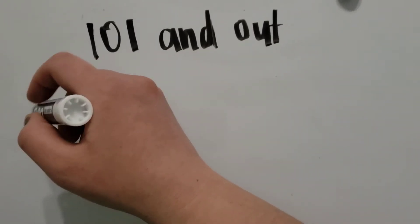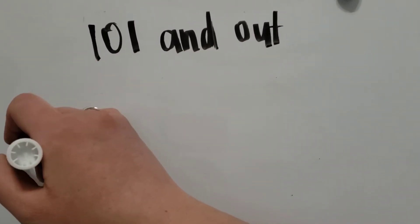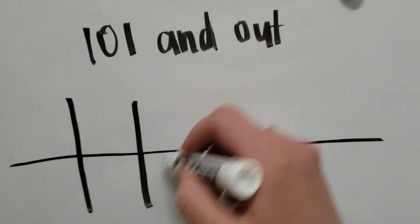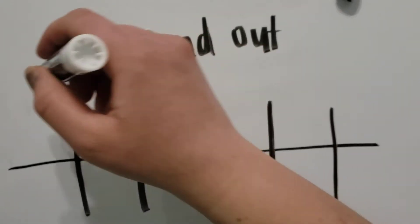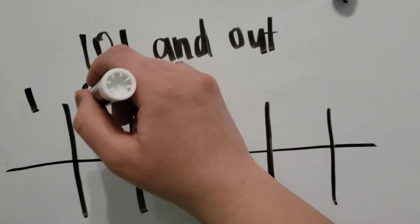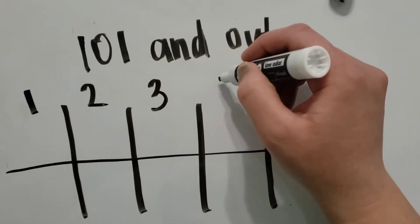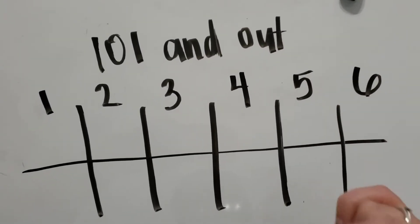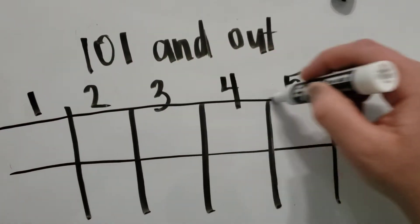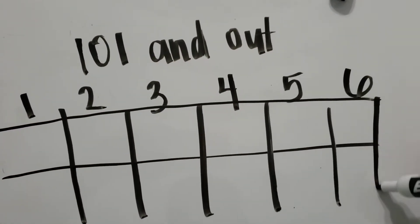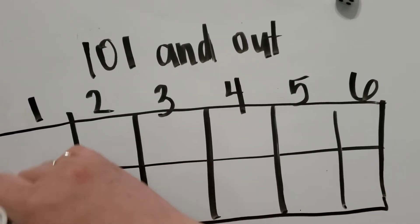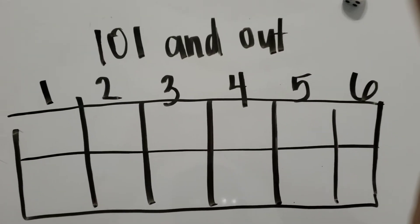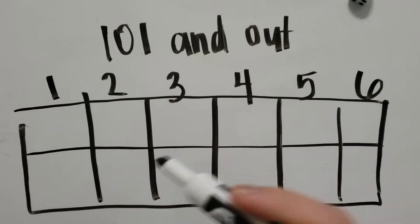So in order to set up this game, I like to just quickly draw a grid because you are going to have six rolls. So this is a game that you can play with either a partner or you can have two teams. But each team has to roll the dice six times. And at the end of your sixth roll, you want to be the closest to 101.